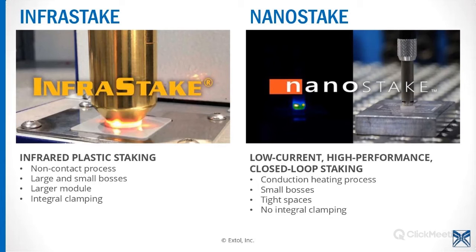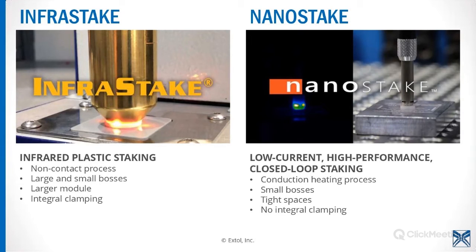Let's talk about the processes in general — Infrastake and Nanostake. Infrastake is infrared plastic staking. It is a non-contact process, used in both large and small boss applications. We have a couple of different module sizes, but they are physically larger than Nanostake. Something very important with the Infrastake process is that it includes integral clamping built into the process at every staking location.